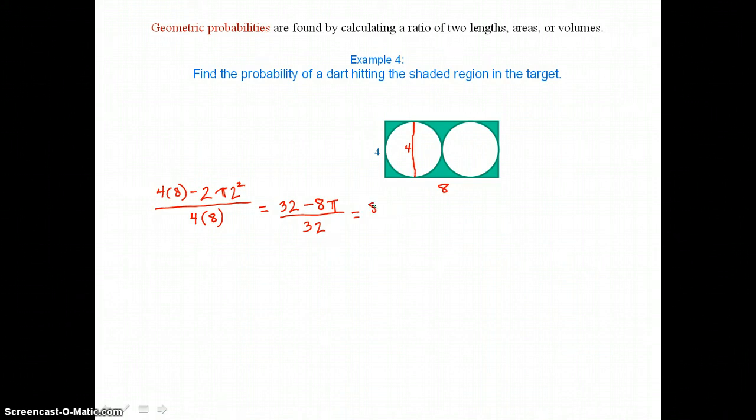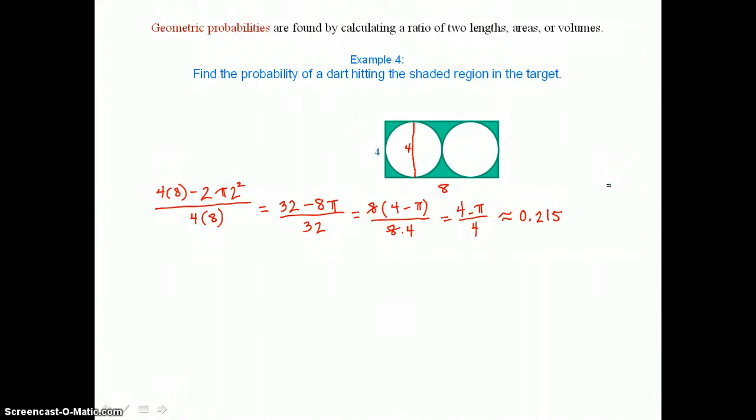Well, we can factor out an 8 from the two terms in the numerator. That's going to leave 4 minus pi, and we can factor 8 from the denominator. That's 8 times 4. So canceling that factor of 8 top and bottom, our exact probability is 4 minus pi over 4, but we'd probably want to approximate this probability. And when we do that, we usually round to 3 decimal places, so 4 minus pi divided by 4 is going to be approximately 0.215. So we have a 0.215 probability that a dart hitting this target will land in the shaded region.